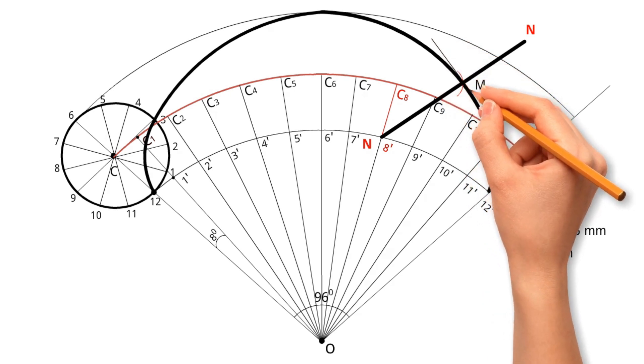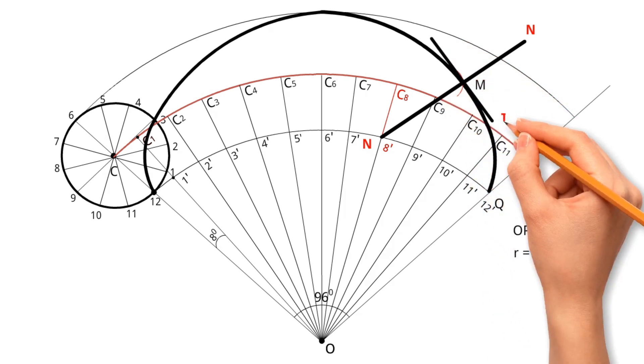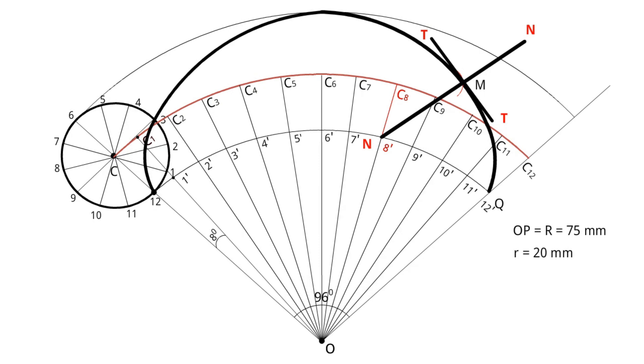Step 14. Draw a line perpendicular to Normal as shown. This line is called Tangent.